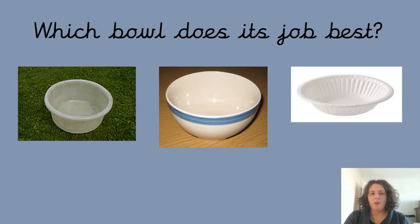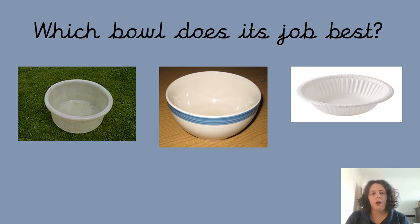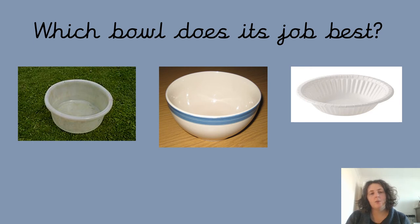This is going to help you with your activity sheet. We've got three bowls here: the one on the grass is a plastic bowl, the one in the middle is a ceramic bowl made of clay that's been heated, and then we've got a paper bowl. Have a think about what the properties of each of these different bowls are and which jobs you would use each bowl for — for example eating soup, eating cereal, or doing some cooking.